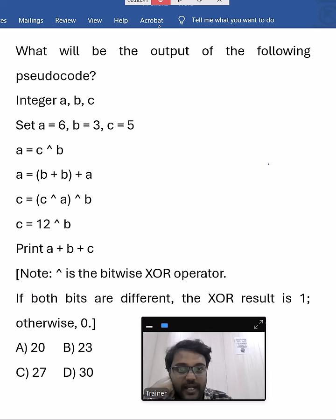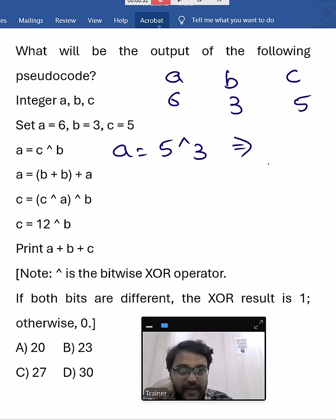First thing we have to calculate A value. A is initially 6, B is 3, C is 5. Now A is updated as C value 5 XOR operation with 3. Now 5 is nothing but 101 in binary, 3 is nothing but 011. When you do XOR operation: 1 and 0 different, result is 1; 0 and 1 different, result is 1; 1 and 1 same, result is 0. Now this value equivalent in decimal is 6.